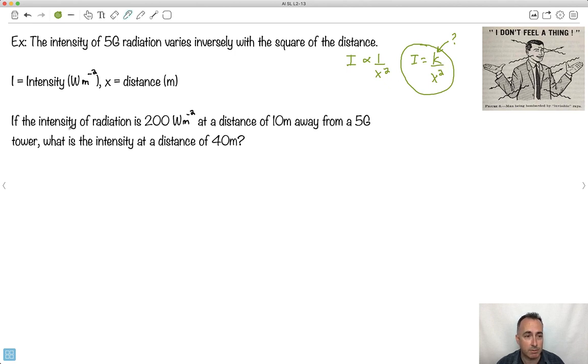That's really like saying I equals some constant over x squared. This is my generic equation for it. Now, I don't know what the constant is, but I do know that it's going to be x squared. We have an example here where the intensity is 200 watts per meter squared at a distance of 10 meters away from a 5G tower.